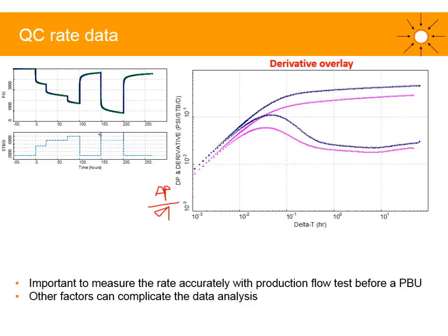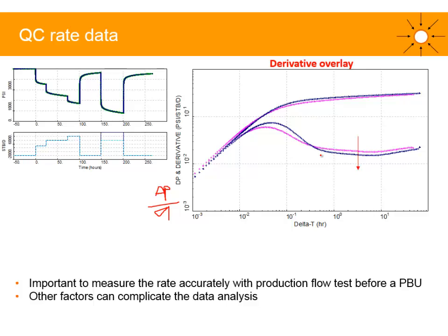Conversely, if we overestimate the rate, the term delta P over Q will be underestimated, and the response will be shifted downwards. You can therefore use the derivative overlay to QC the rate data. With the correct rate, you should expect to see consistency between the derivative responses. If you see a parallel shift, you likely have an issue with the rate data.